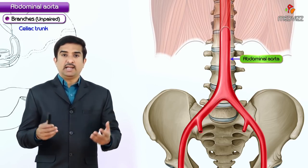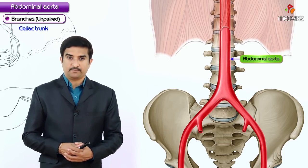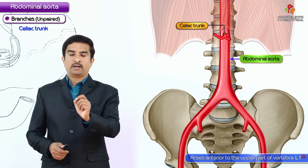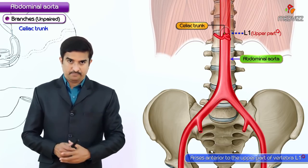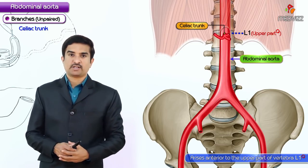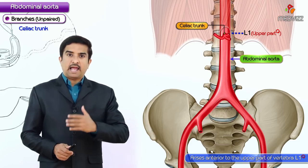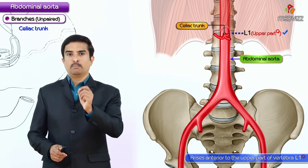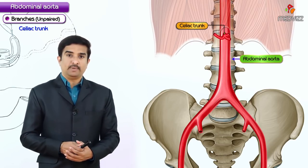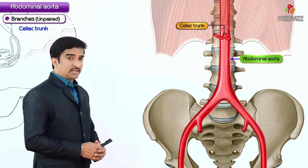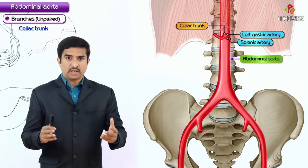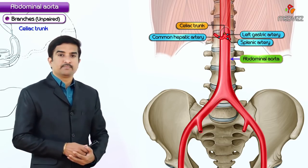The first branch is the celiac trunk, also called the celiac artery. The celiac artery arises anterior to the upper part of the vertebral body L1. When answering exam questions about the origin of the celiac trunk, select the option: origin is anterior to the upper part of vertebral body L1.